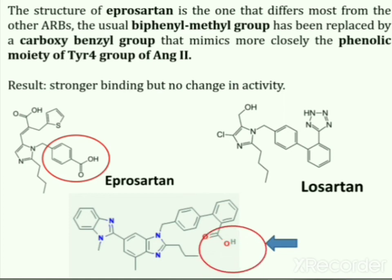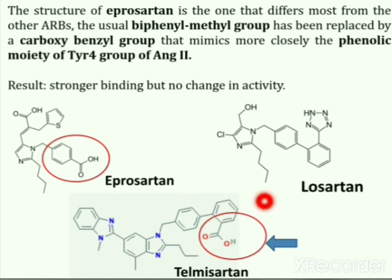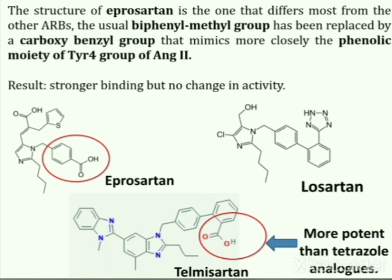Telmisartan has a carboxylic acid at the second position of the biphenyl methyl group, and this compound is more potent than most of the tetrazole analogs.